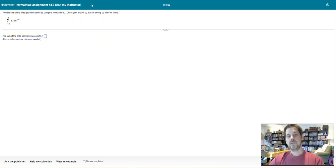Greetings everybody. So here is a question that just came in from somebody working on assignment 4.3. No matter what assignment it's from, the question says find the sum of the finite geometric series using the formula for s sub n, and check your answer by adding up the terms.